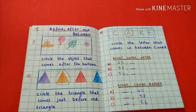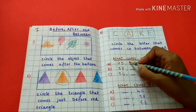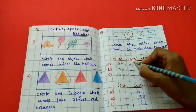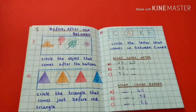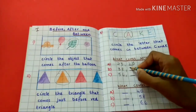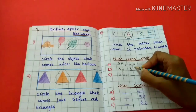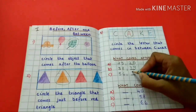What comes after? 25 — 26. 38 — 39. 56 — 57.